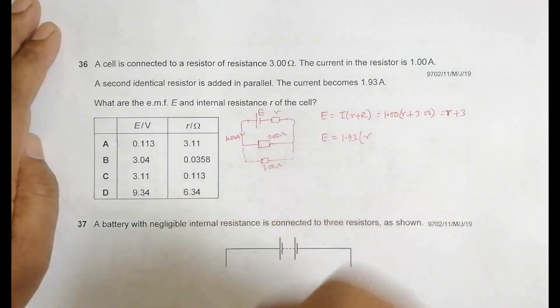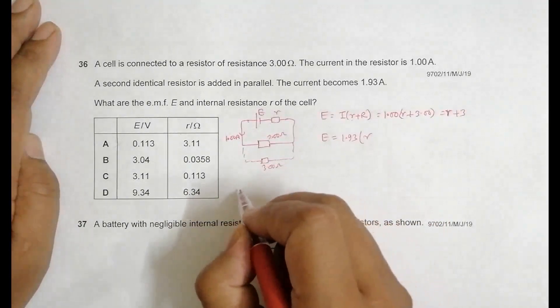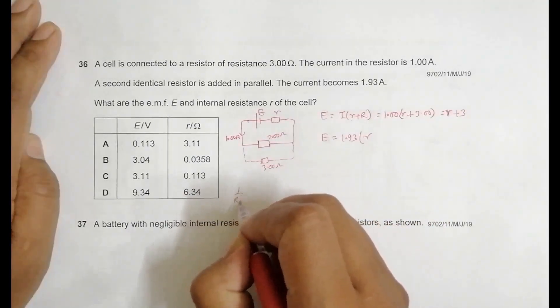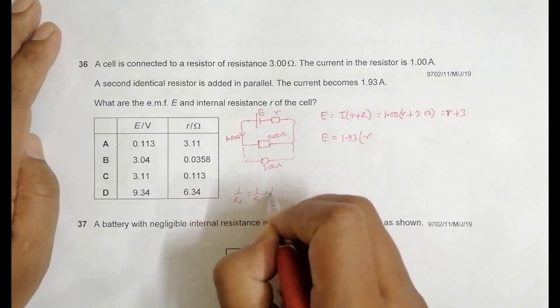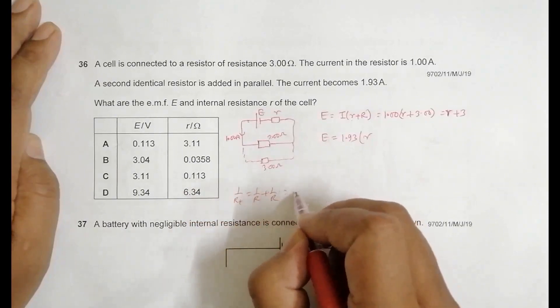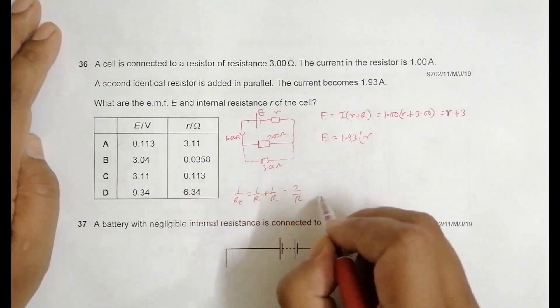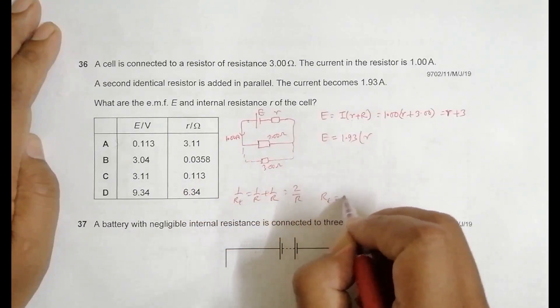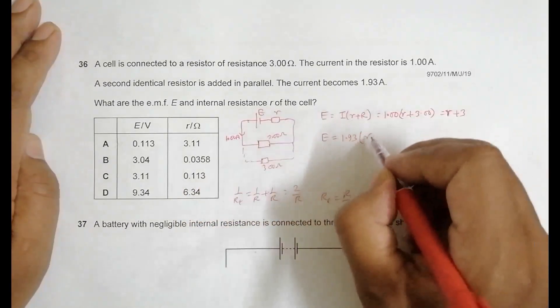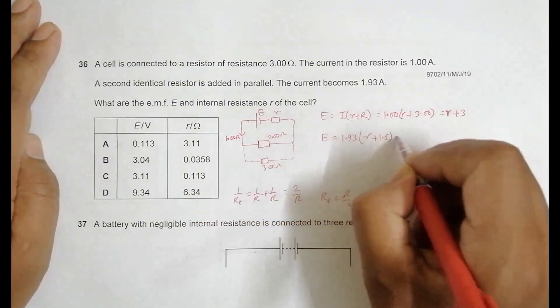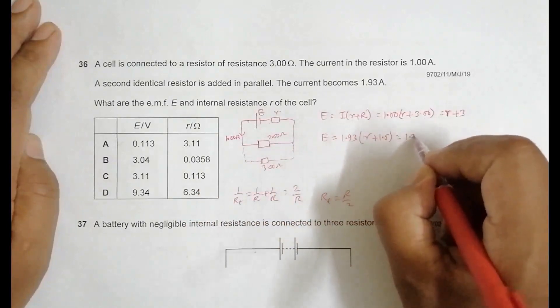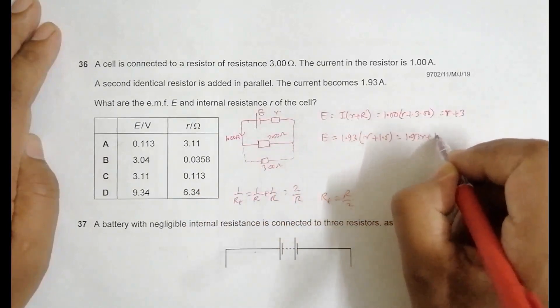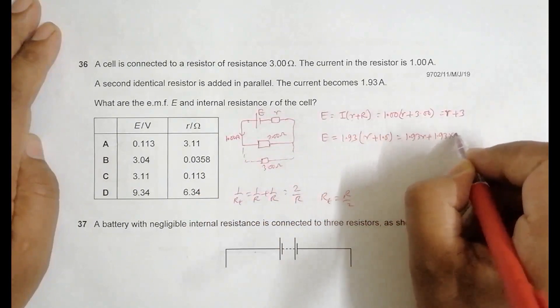Now the new resistance here is the parallel of 3 and 3, which is 1.5. In parallel arrangement, if the resistances are the same, their total value should be equal to half of that, which comes from 1/R_total = 1/R + 1/R = 2/R. So this R_total should be equal to R/2, which is 1.5. So E equals 1.93r plus 1.93 times 1.5.